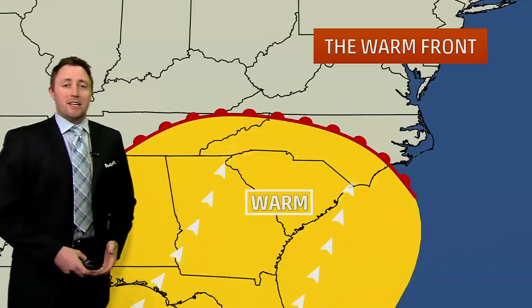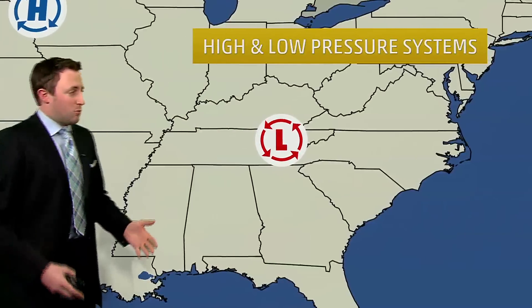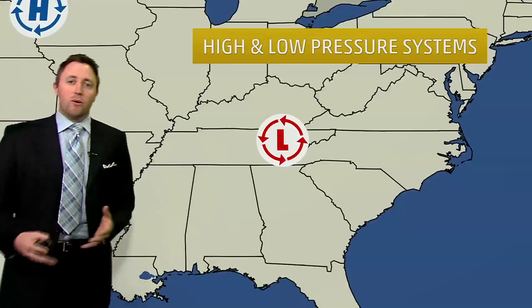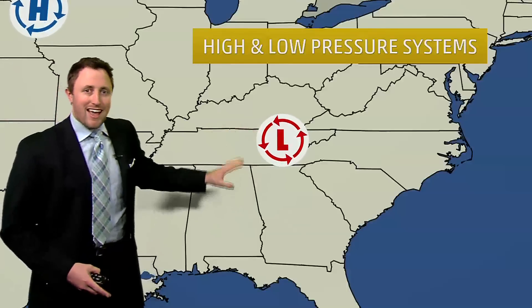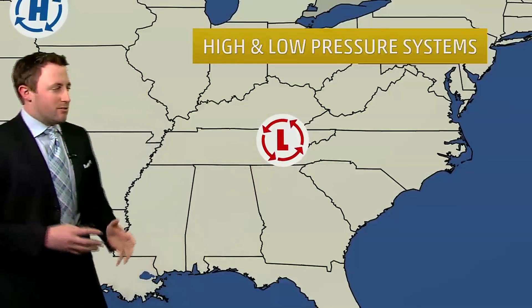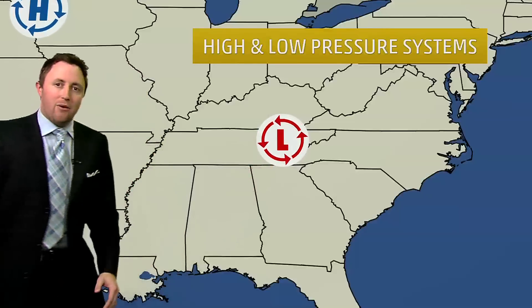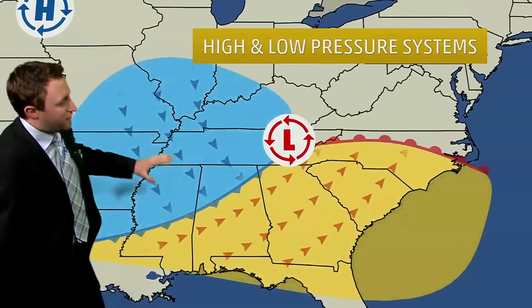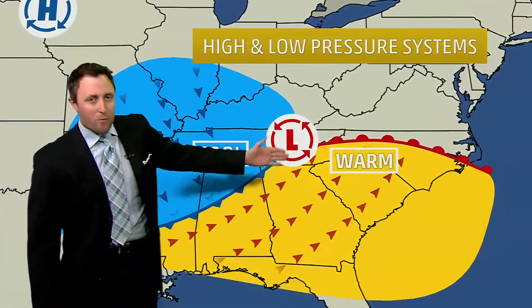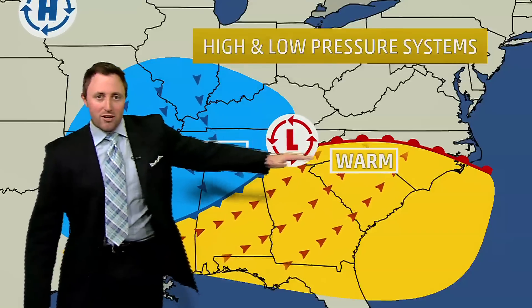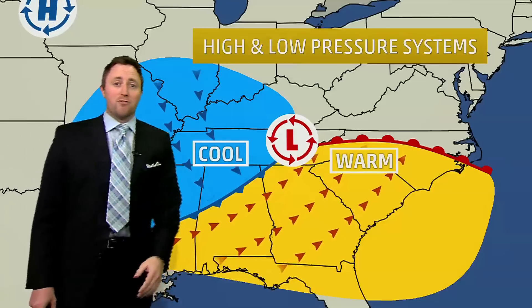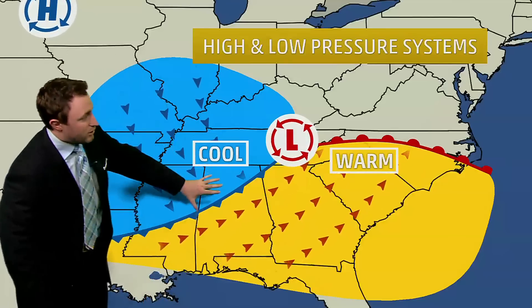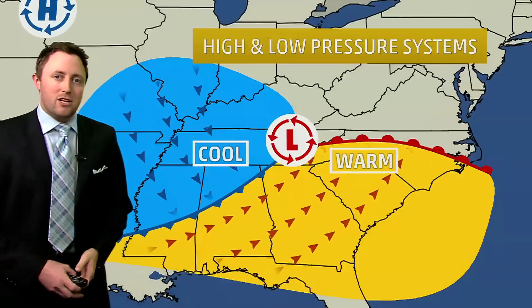Now we start adding in things like pressure systems. We have a low pressure system right here. Air around the low pressure system moves counterclockwise and inward. So when we start putting those air masses around that area of low pressure, we begin to see a few things happening — the warm air surging northward is where the warm front is, and the cold front surging southward is where we line up that cold front. Then we zoom in closer where we get all the precipitation.